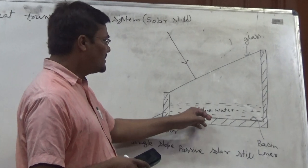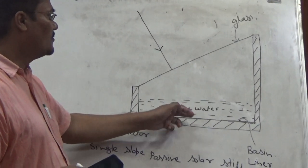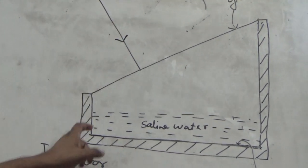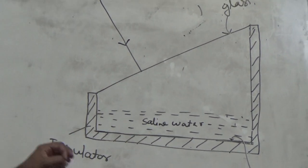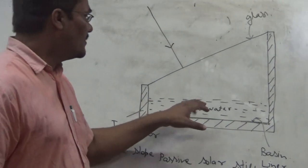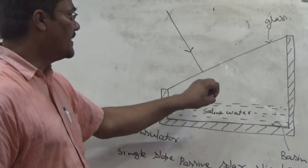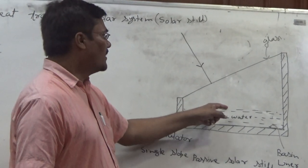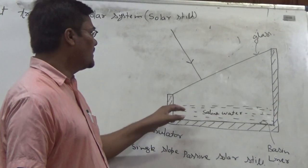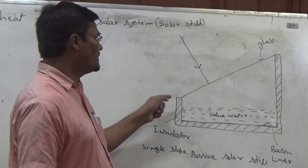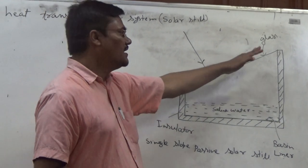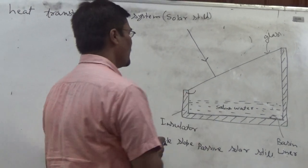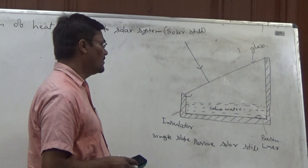So what will happen, this basin liner will transfer the heat to the water. So water will get heat directly from the sunlight as well as from the basin liner. So the temperature of water will rise. So due to rising temperature, evaporation will occur. And after evaporation, some condensation will take place, condensation will take place at the colder surface, colder surface is the glass. So the condensation will take place and then will be collected in a tray. So this is the purified water.